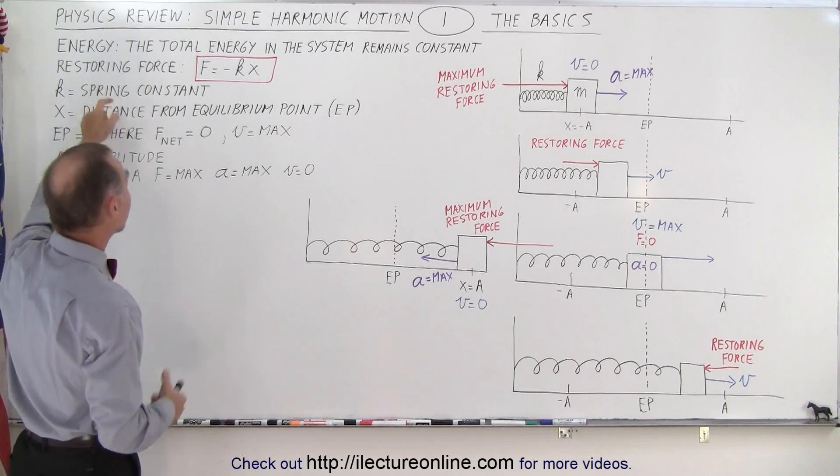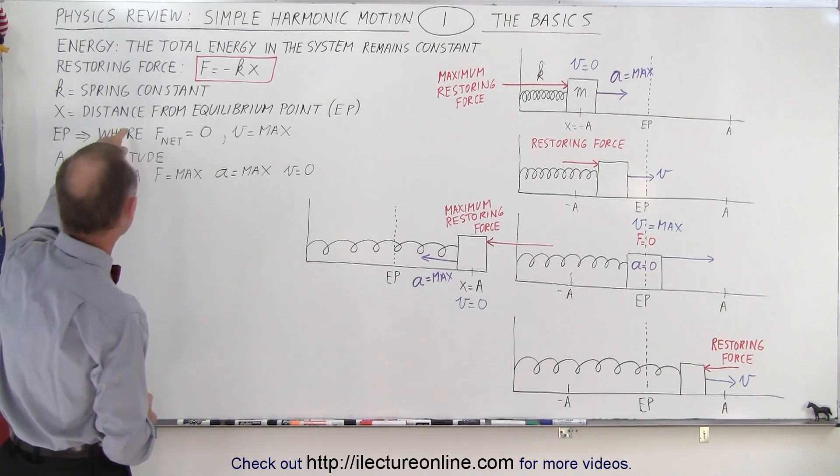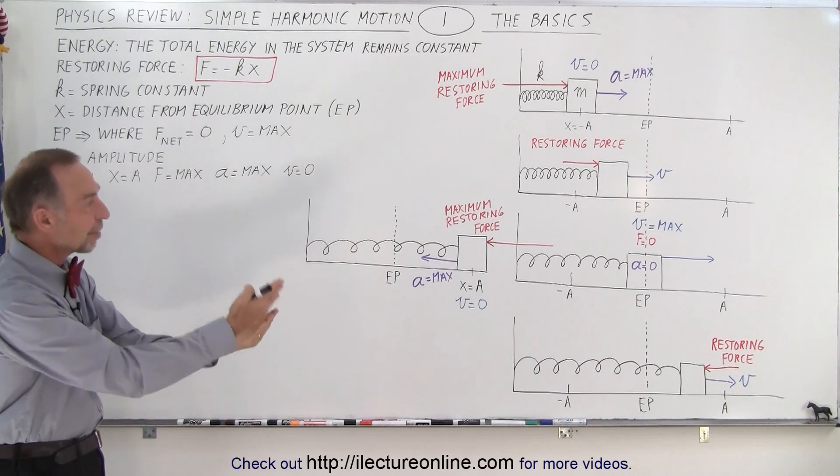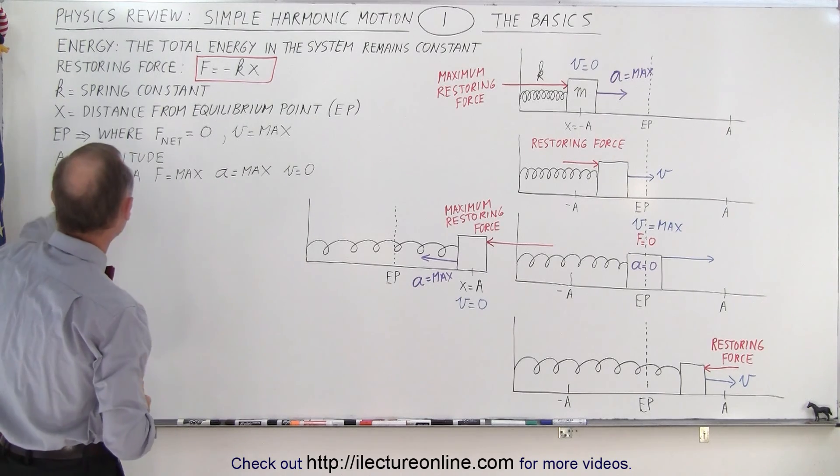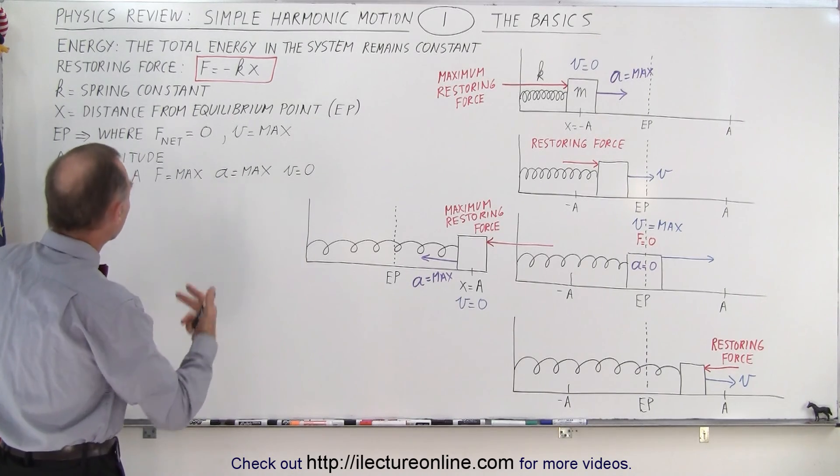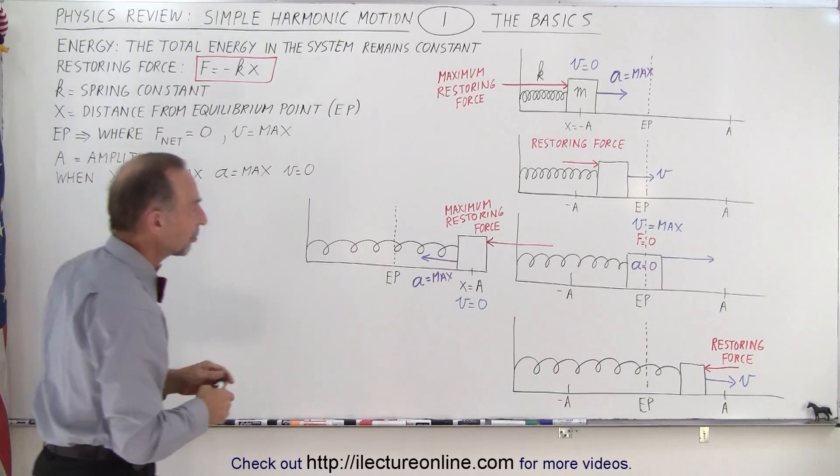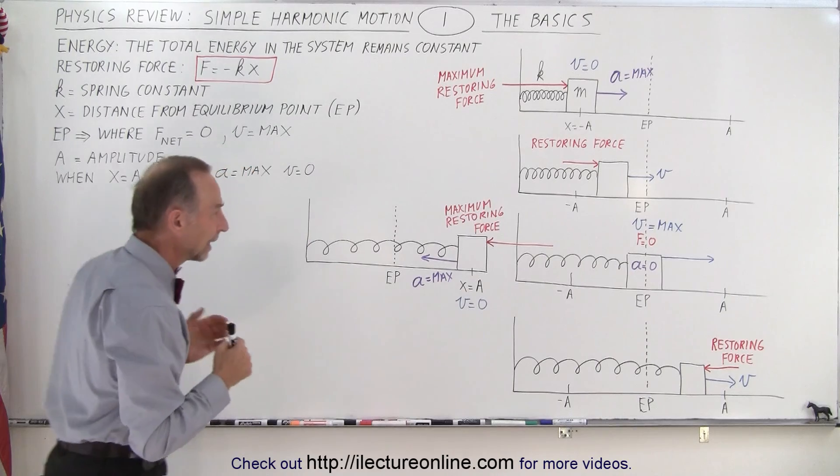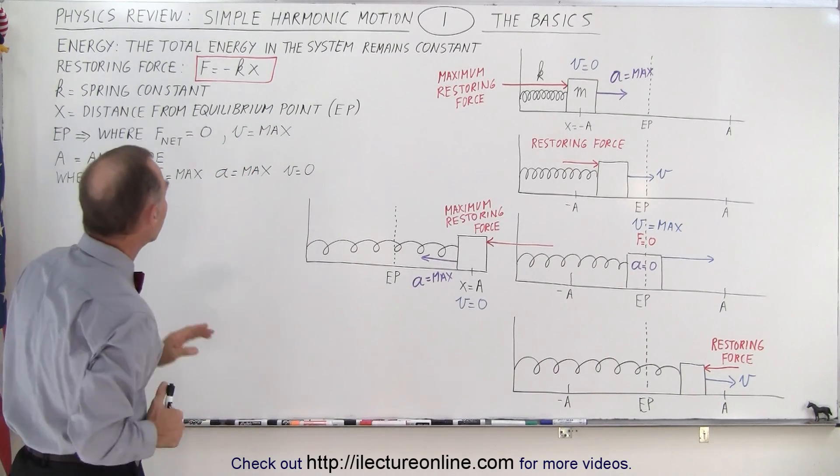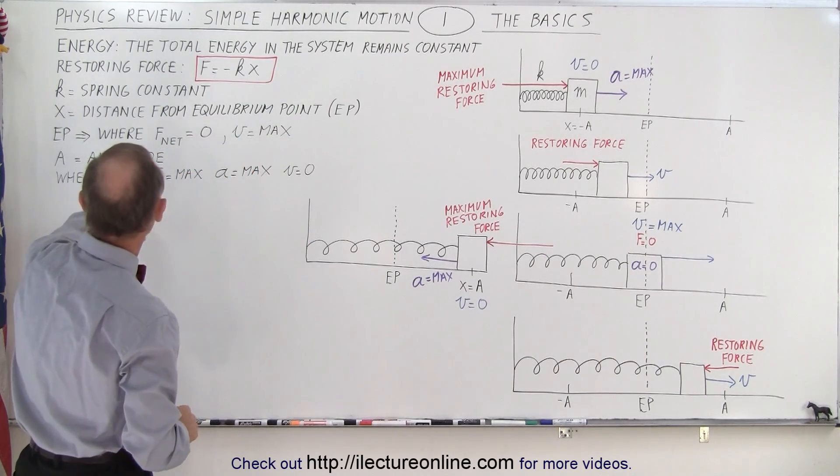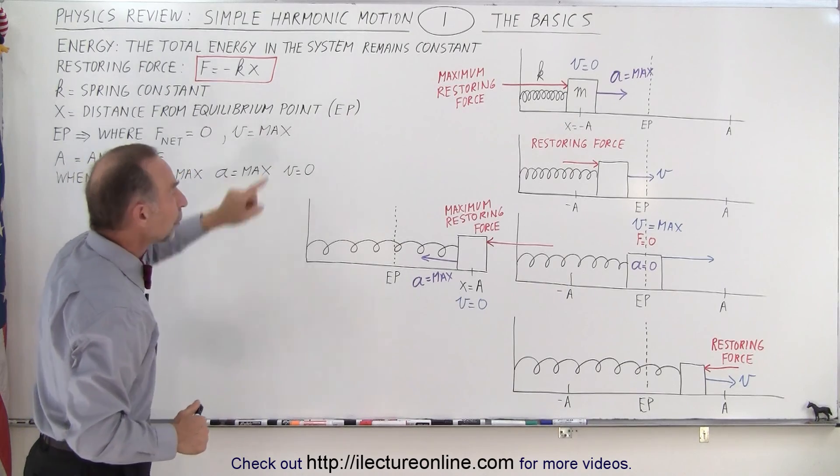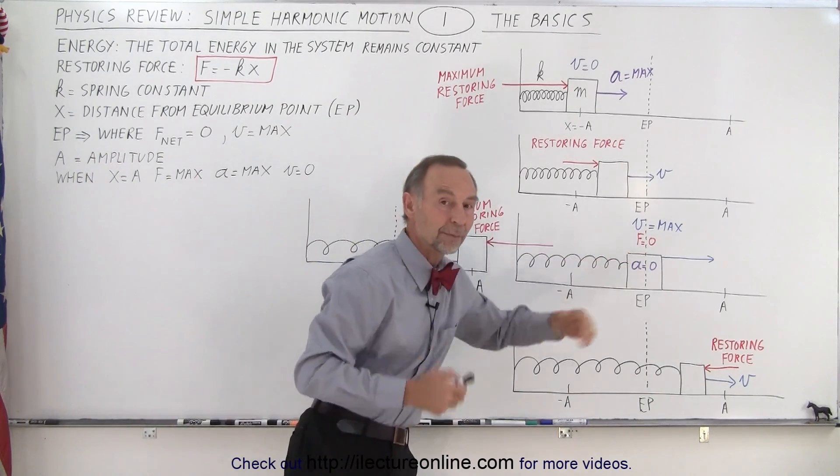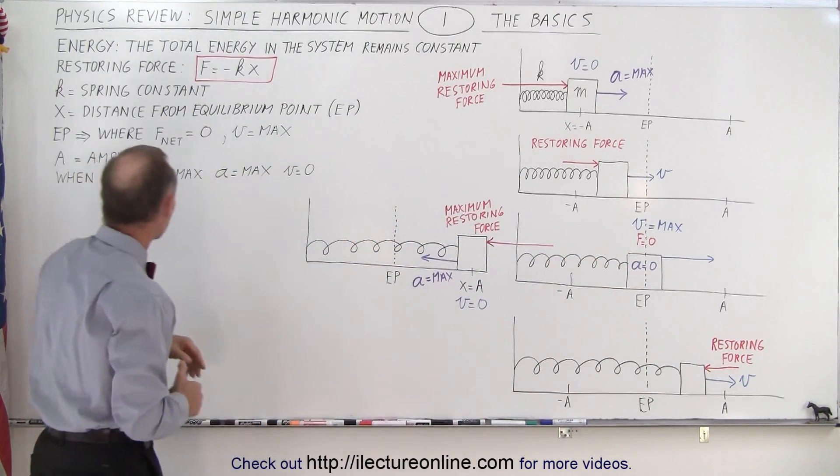K is known as the spring constant, essentially the strength of the spring. X is the distance away from the equilibrium point. EP is the equilibrium point, where the net force equals zero. At that moment the acceleration will be zero, and the velocity is at maximum.